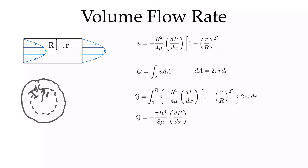We can substitute the equation for u inside our integral and integrate from the center of the pipe out to the wall at R, with dA being 2πr dr. We can evaluate this integral to see that the volume flow rate is again negative because dp/dx is a constant and is negative, and it's proportional to the radius to the fourth. As we increase the pressure drop across this pipe — making p1 minus p2 higher — we get a larger flow rate. Expressing this in terms of diameter, the volume flow rate is π/128 times the diameter to the fourth power.